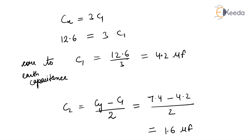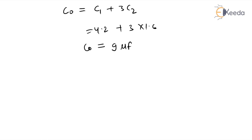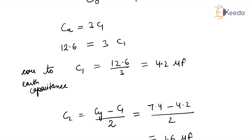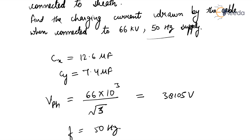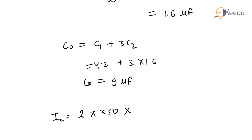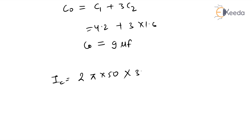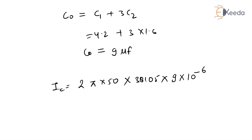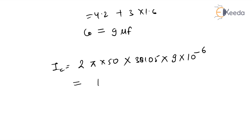Now substituting C0 into the charging current formula: IC equals 2πF·VPH·C0 equals 2π × 50 × 38105 × 9×10⁻⁶ farad, which gives a charging current of 107.74 amperes.